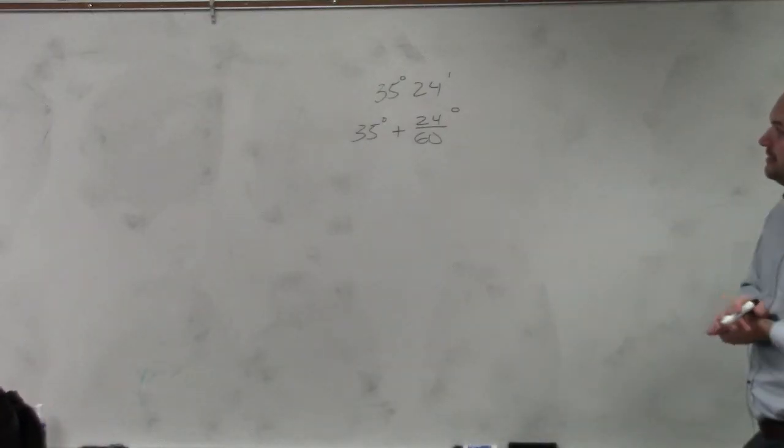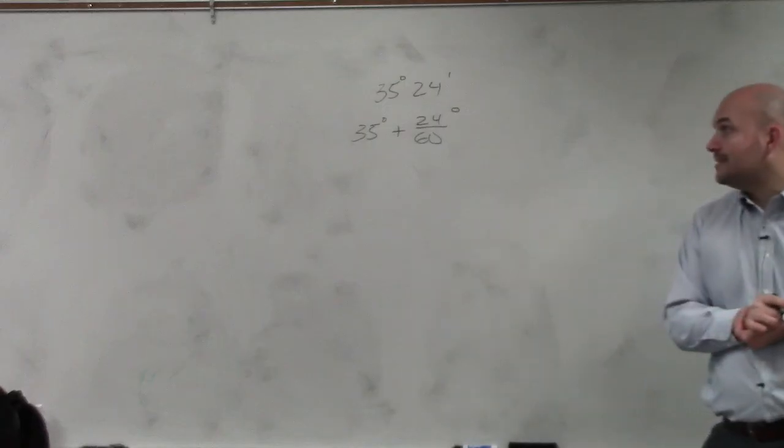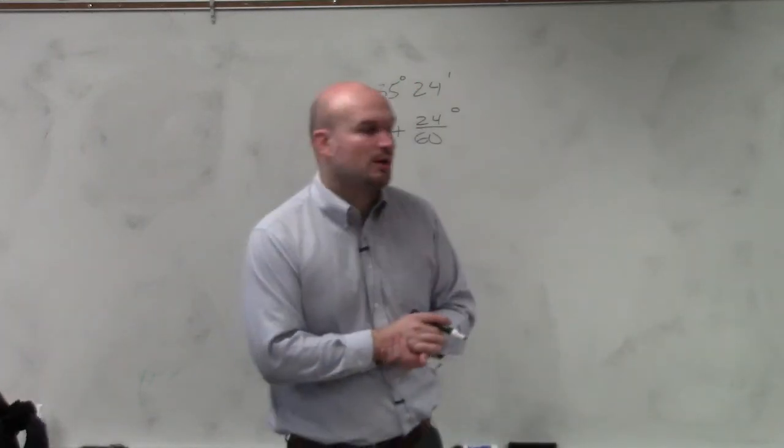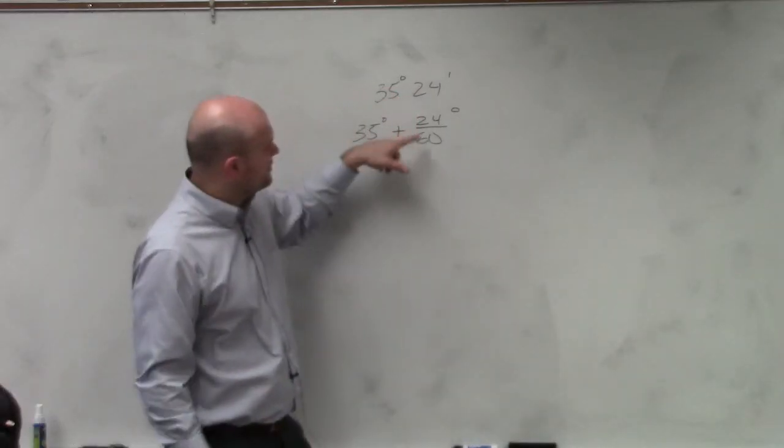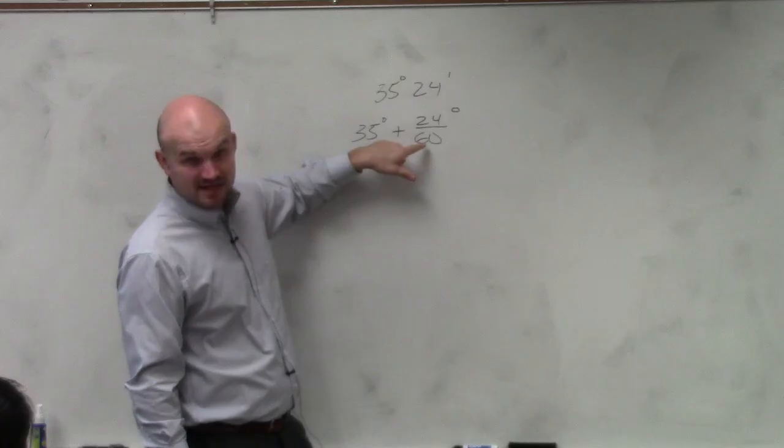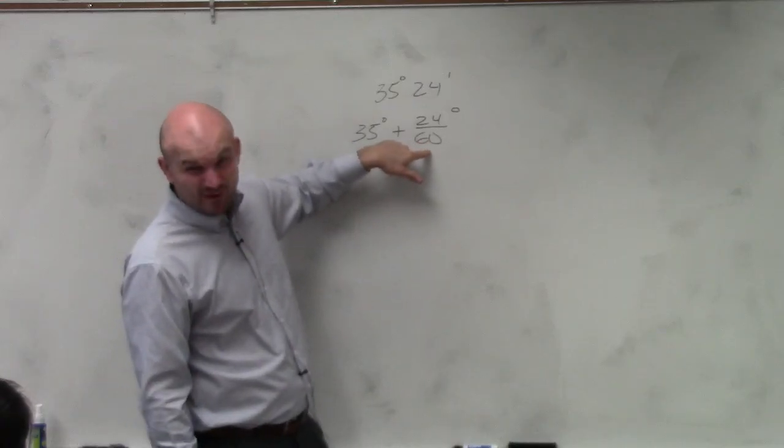So we can go ahead and simplify this. You can think of numbers that divide in the top and the bottom. Immediately to me, I see the number 6. And then I say, oh, well, let's look at the number 12. And the number 12 definitely goes into the numerator twice, goes into the denominator five times, right? So that's 2 fifths, which is the same thing as 0.4.